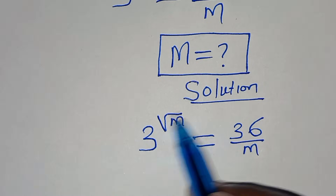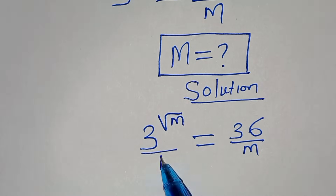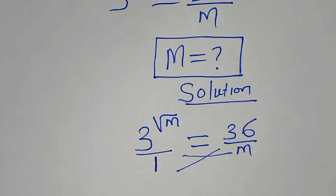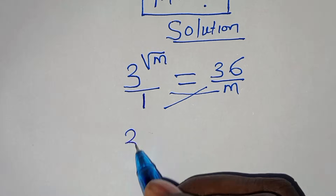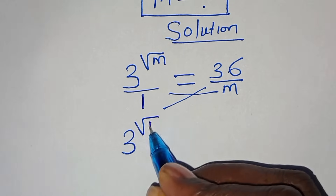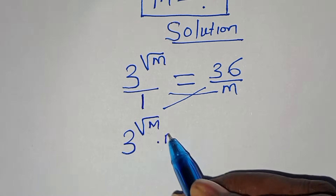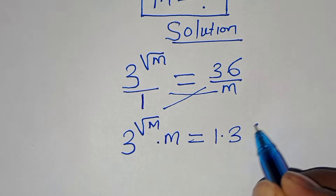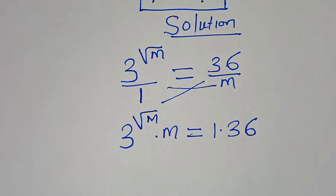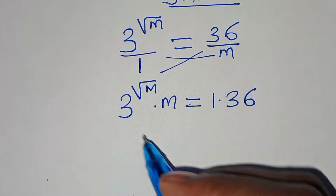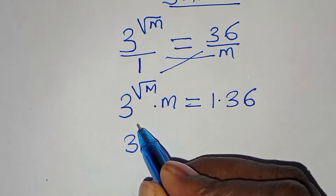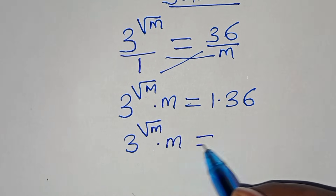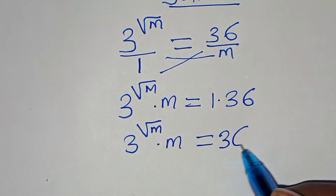So 3 to the power of square root of m is our whole number, so this is over 1. The next step is to cross multiply, so that now we have 3 to the power of square root of m multiplied by m, which is equal to 1 times 36. So we have 3 raised to the power of square root of m multiplied by m, equal to 36.